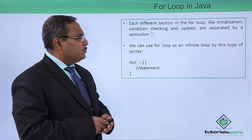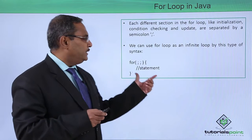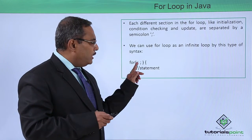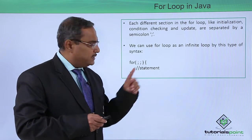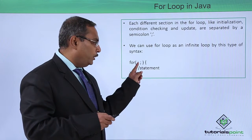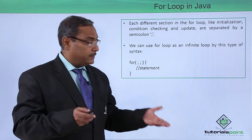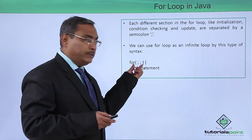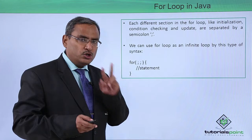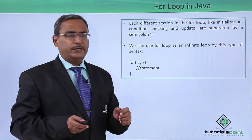We can also use this for loop for infinite looping using this construct. Here you can find that only two semicolons are mentioned — there is no initialization code, no condition, and no update code. That is why within the parentheses we have put the semicolon twice, and this forms an infinite loop.